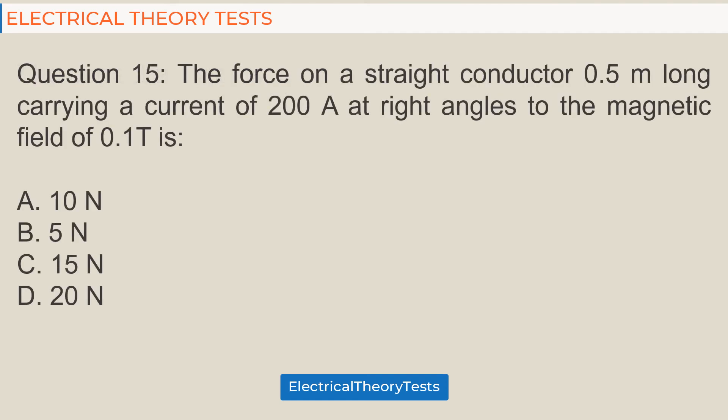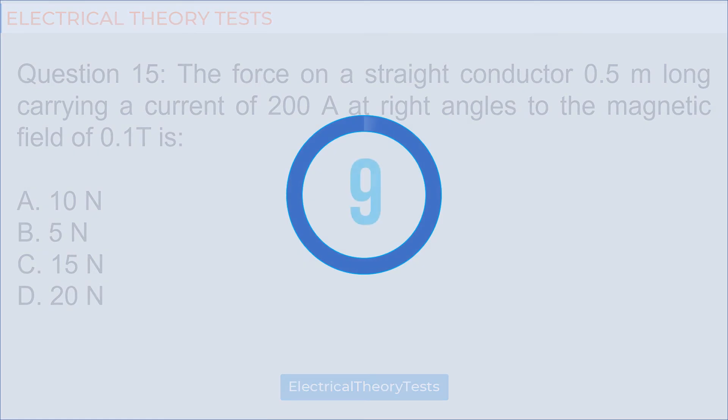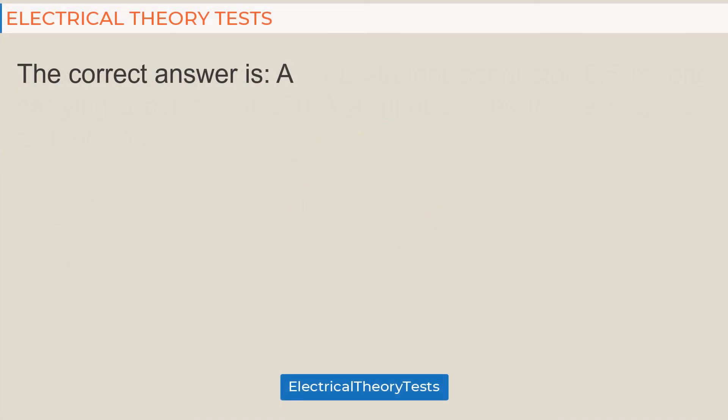Question 15: The force on a straight conductor 0.5 meters long carrying a current of 200 A at right angles to the magnetic field of 0.1 T is: A: 10 N, B: 5 N, C: 15 N, D: 20 N. The correct answer is A.